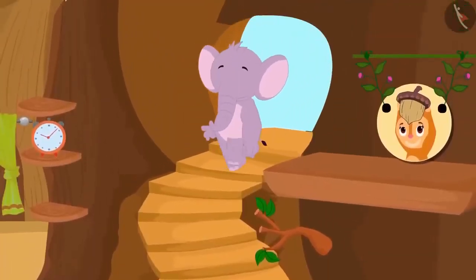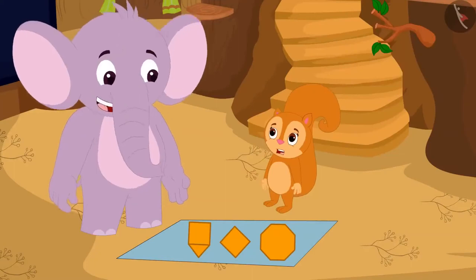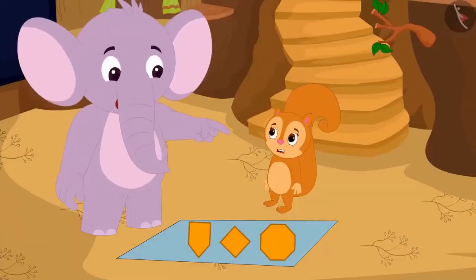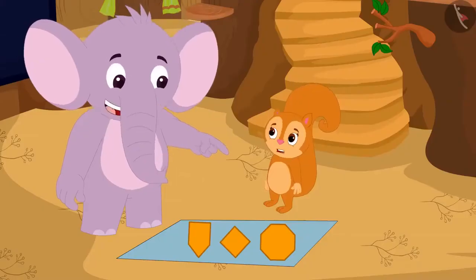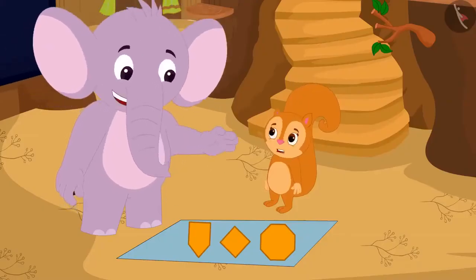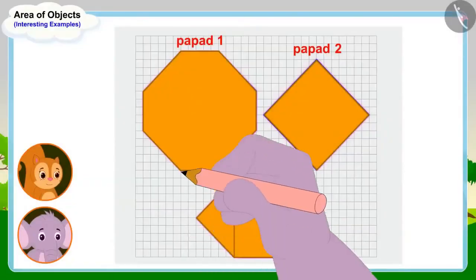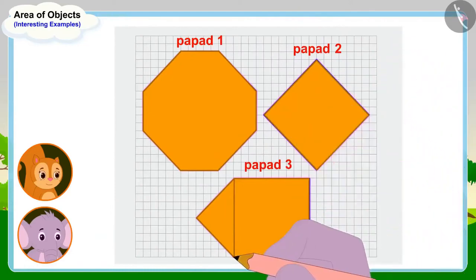Just then, Appu came to her house and Chanda asked him the question. Appu told Chanda it's very easy, and quickly drew equal squares of one centimeter edges on a paper. To find the answer, all we need to do is find the area of the poppers of these three shapes. The shape which has the largest area is the largest. Appu then made outlines of poppers of all three shapes on the paper with the help of a pencil.